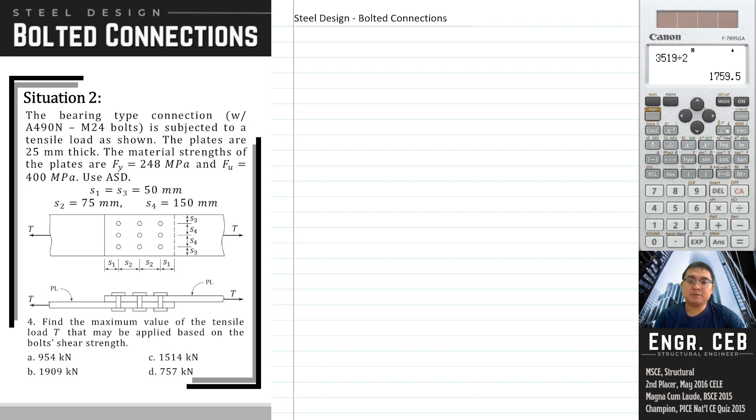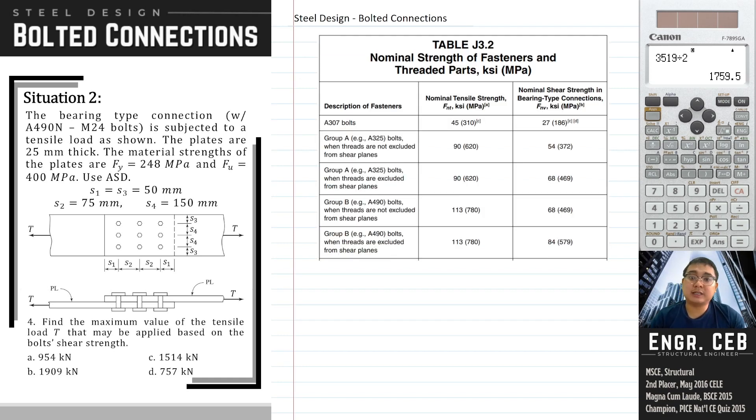Problem 4: find the maximum value of the tensile load T that may be applied based on the bolts shear strength. First, we need to get the nominal shear strength of the bolts used in the problem. According to the problem, the property of the bolts is A490N. A490 corresponds to the group of the bolts and the letter N stands for threads not excluded.